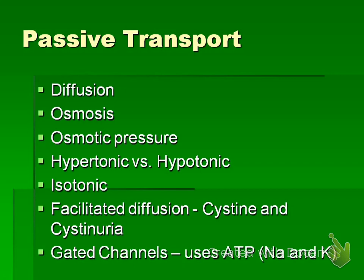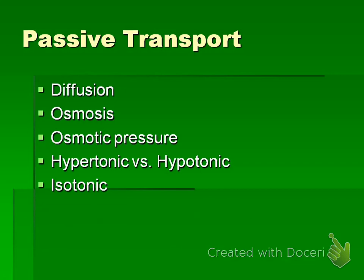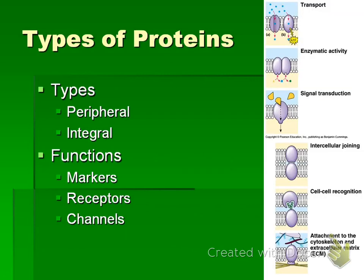Gated channels work similarly to facilitated diffusion. For example, sodium attaches to the outside wall, which causes the gate to open, allowing potassium to pass through. Once the potassium transfer is complete, the sodium releases and the gate closes. It's like a key card at an apartment gate — you put the card in, the gate opens, you pull it out, and the gate closes. This is called a gated channel and it uses ATP.